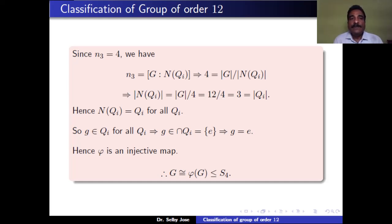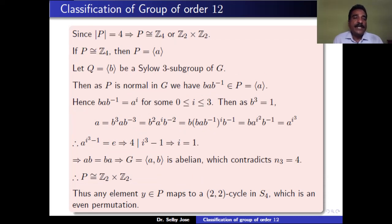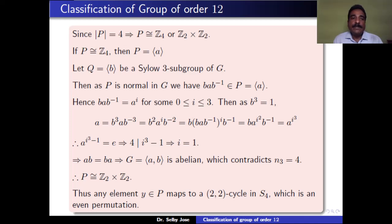Since φ is injective, G is isomorphic to φ(G), which is a subgroup of S4. Now since |P| = 4, P can be isomorphic to Z4 or Z2 × Z2. If P ≅ Z4, then P is a cyclic group of order 4; let A be a generator of P, and let B be the generator of the Sylow 3-subgroup Q. Since P is normal (N2 = 1), BAB⁻¹ ∈ P = ⟨A⟩, so BAB⁻¹ = Aⁱ for some i with 0 ≤ i ≤ 3.